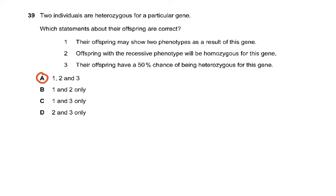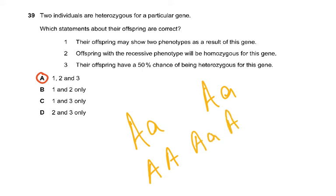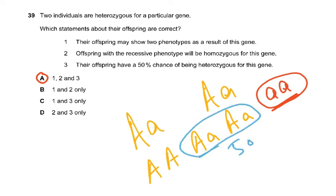Question 39: Two individuals are heterozygous for a particular gene. Which statements about their offsprings are correct? Their offspring may show two phenotypes as a result of this gene - yes, one phenotype, this is the same phenotype, and this is the different phenotype. Phenotype means the physical characteristics. Offsprings with the recessive phenotype will be homozygous for this gene - yes. Their offsprings have a 50% chance of being heterozygous - absolutely correct, 50% chance. All three were correct.